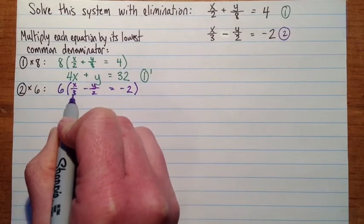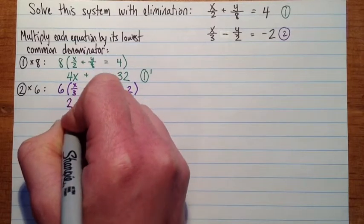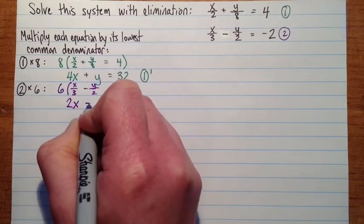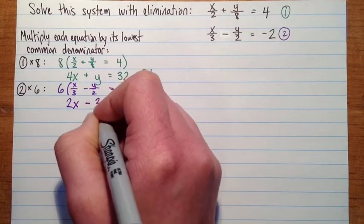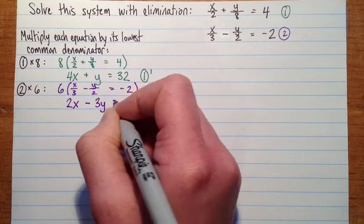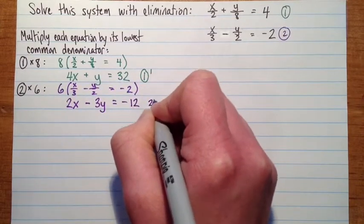So here we have 6x over 3, which is going to be 6 divided by 3 is 2, so it'll be 2x, minus 6y over 2, and 6 divided by 2 is 3, so that's 3y. And that's equal to negative 12, so that is 2 prime.